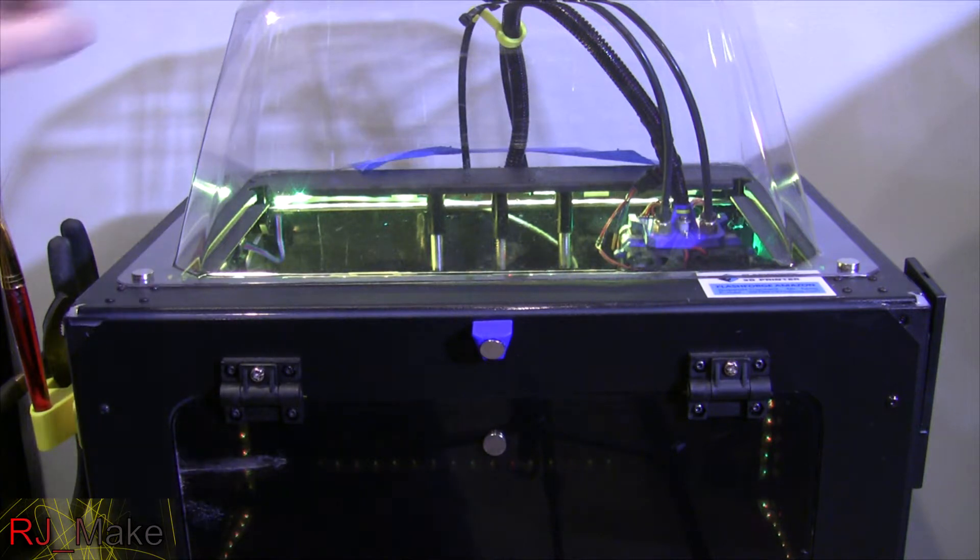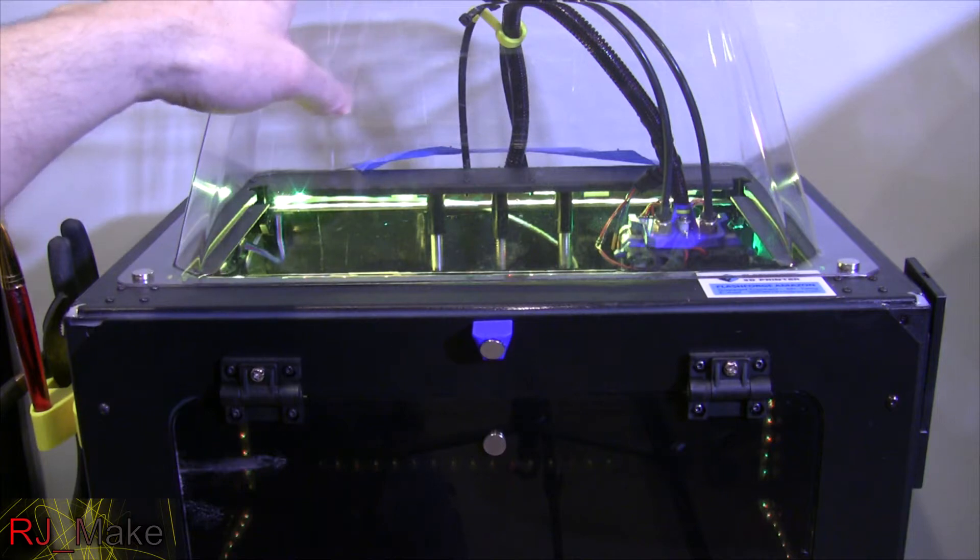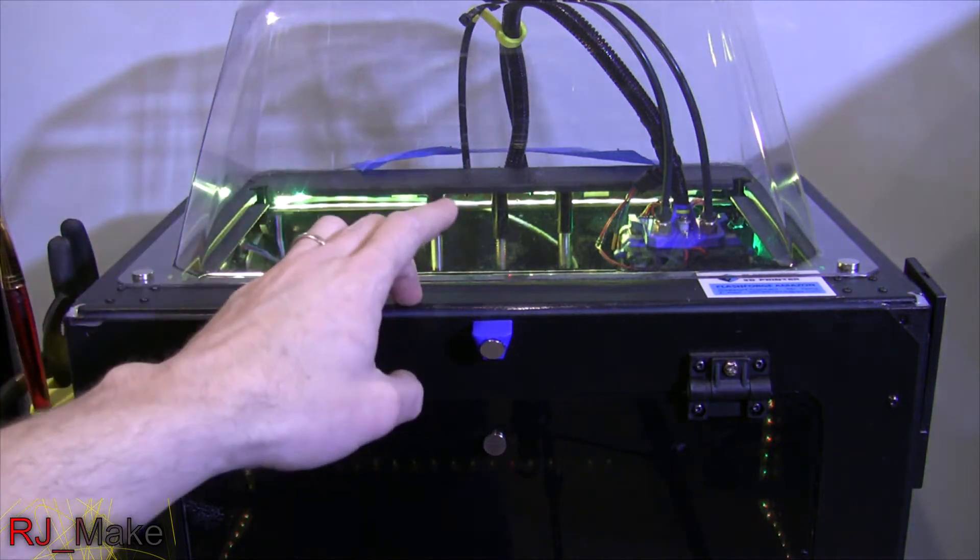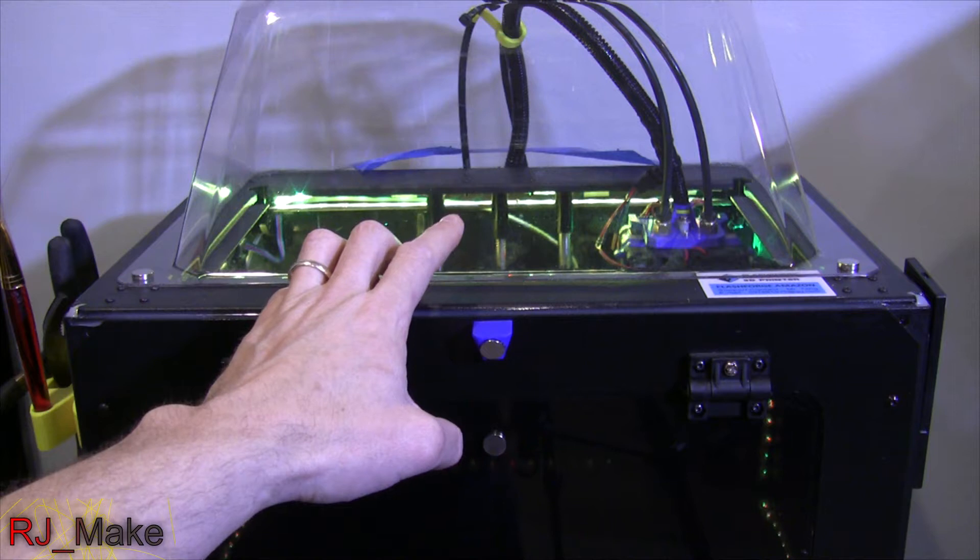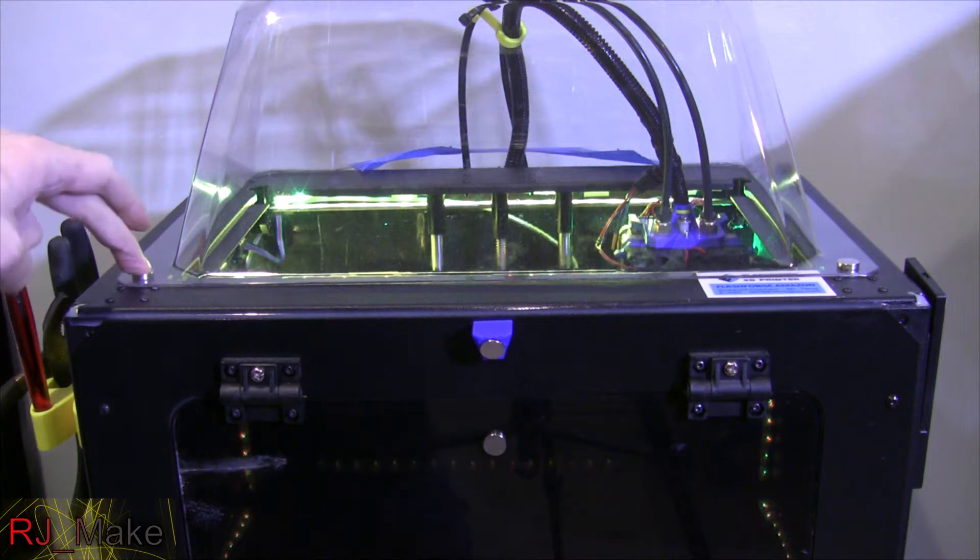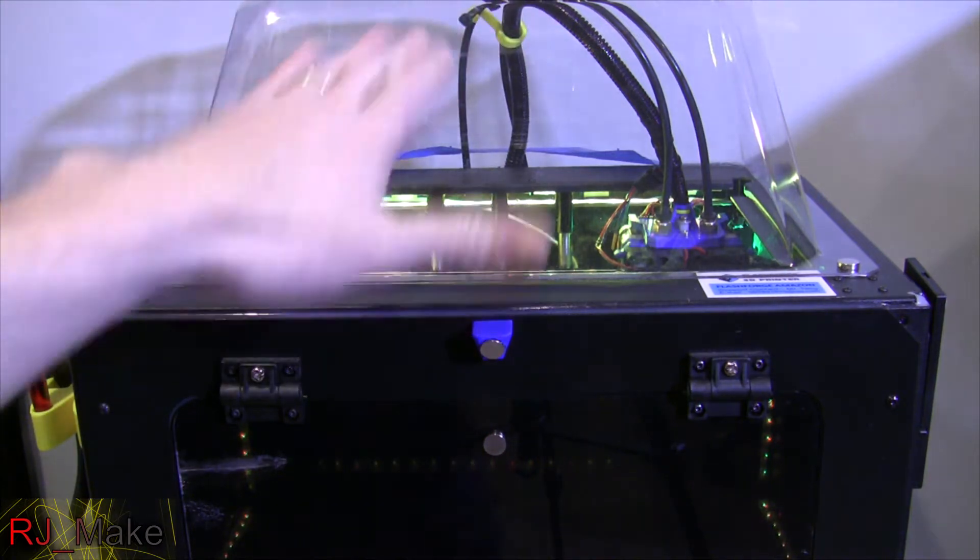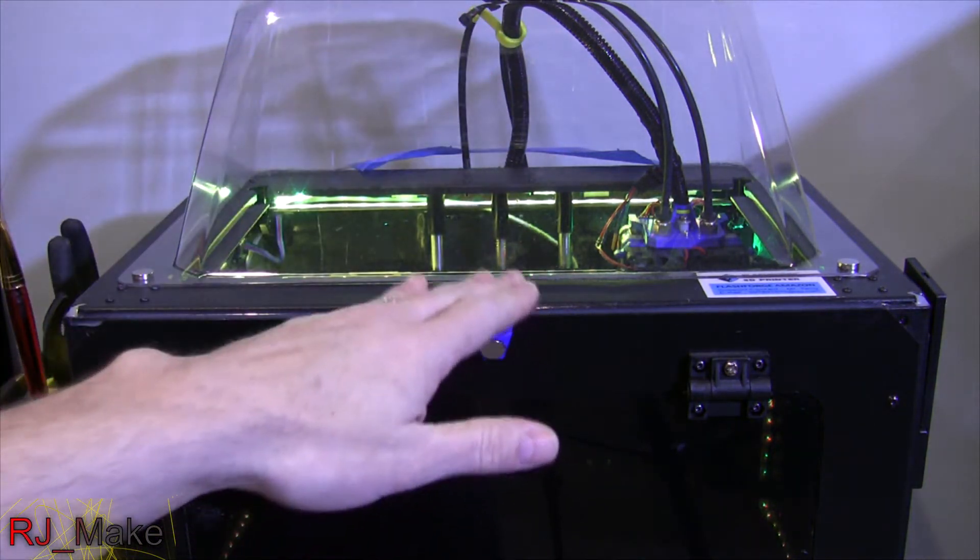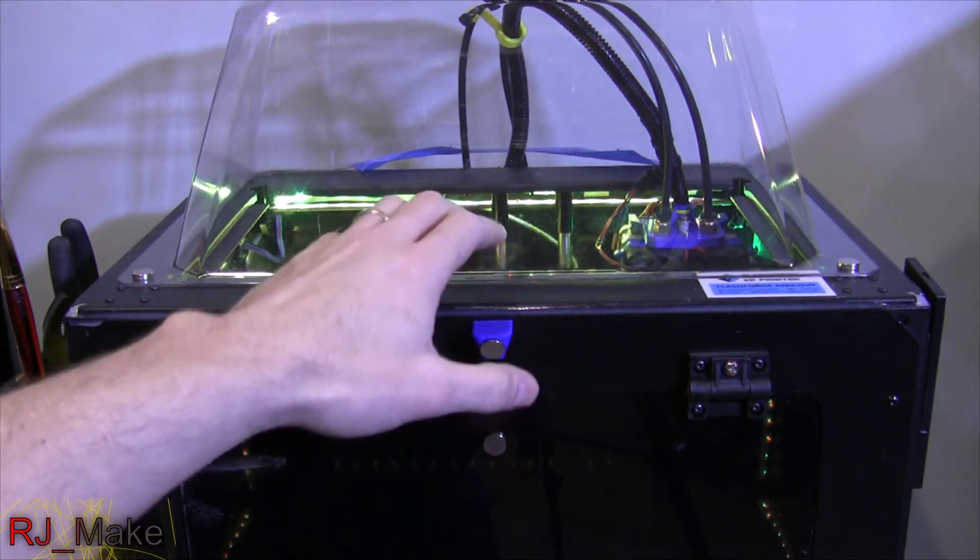The first is a replacement top. This is the top from the MakerBot Replicator. I have superglued four neodymium magnets, two on each side to keep the top down quite well to the cover.